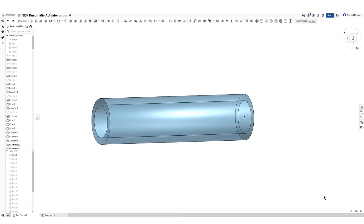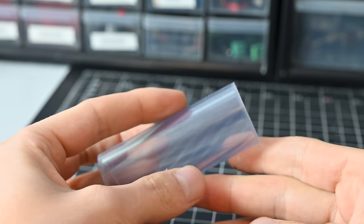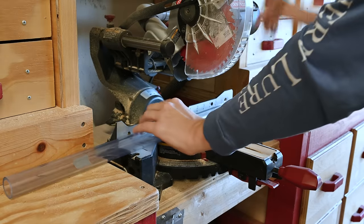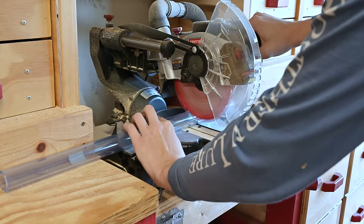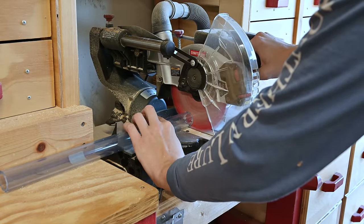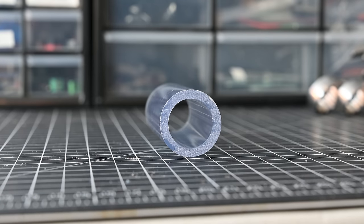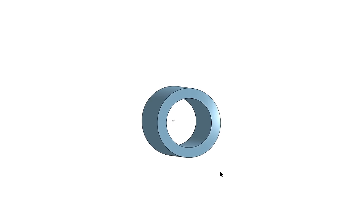So to get started building this thing, I selected a pipe to use as the cylinder walls. You could potentially 3D print this, but PVC pipe is so easy to get, there's really no point in doing that. This pipe is rated up to 320 PSI and it comes in clear which will make really good visuals for this video.